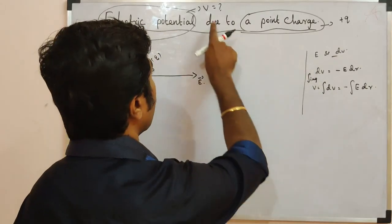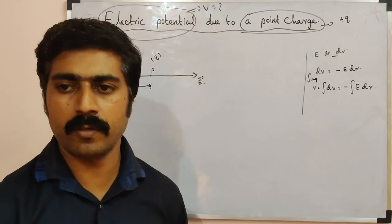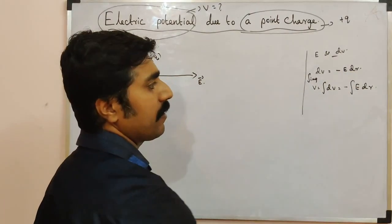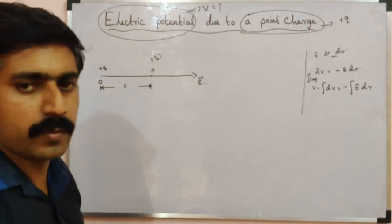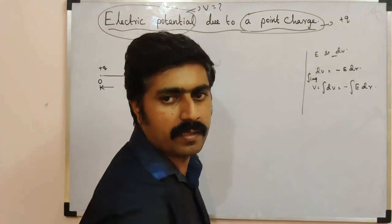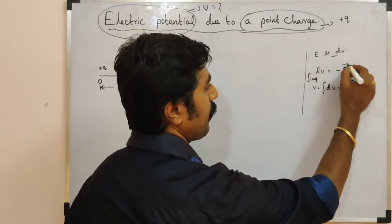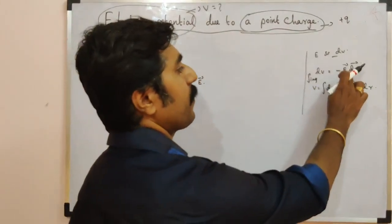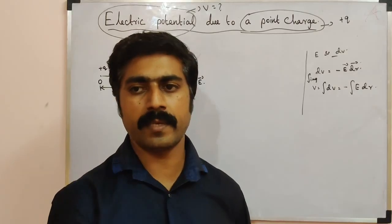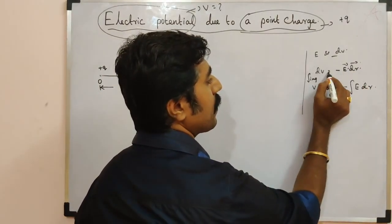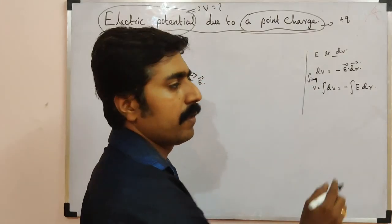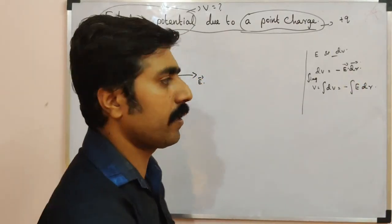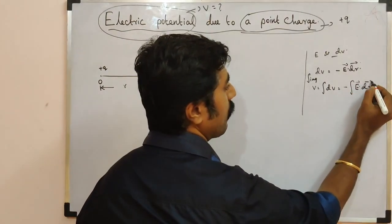Potential is a scalar quantity. The electric field E is a vector and dR is a displacement vector. Since both are vectors, we use the dot product — scalar product. The dot product gives a scalar result, so E vector dot dR vector is correct here.